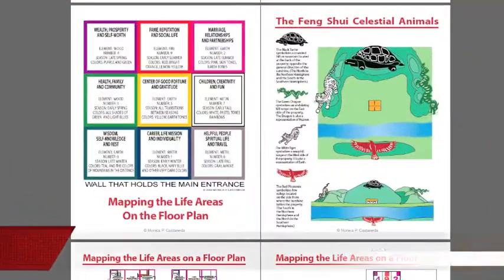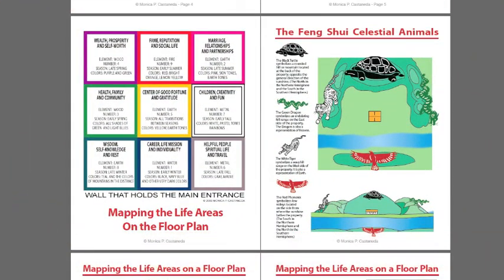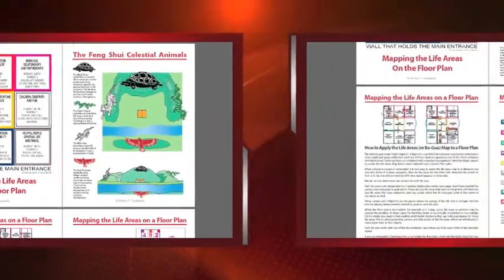There's a simplified version of the Bagua Map and the Feng Shui Celestial Animals, which explains about form school and the type of formations you would look for in the country to find the ideal Feng Shui location. My school, the Nine Steps to Feng Shui System, is a derivation of form school.